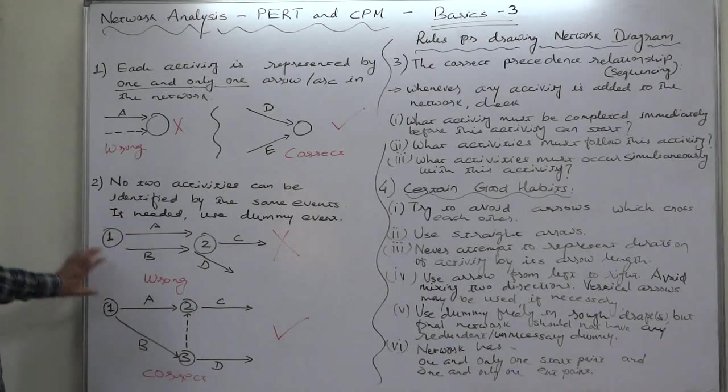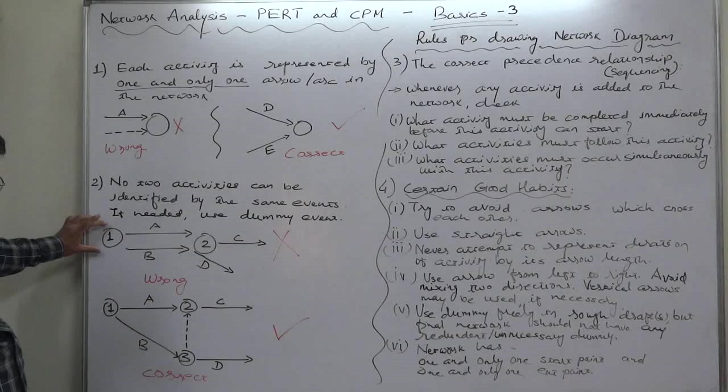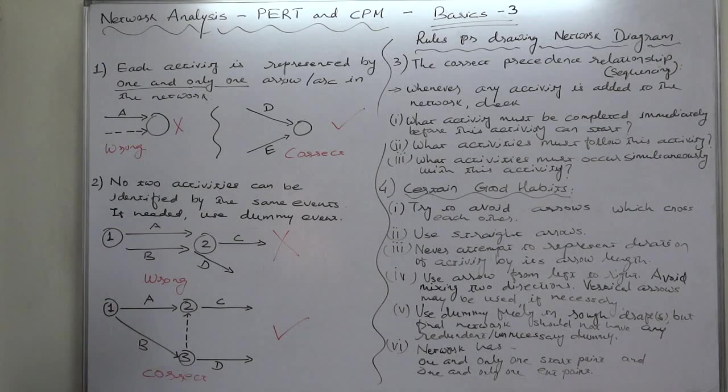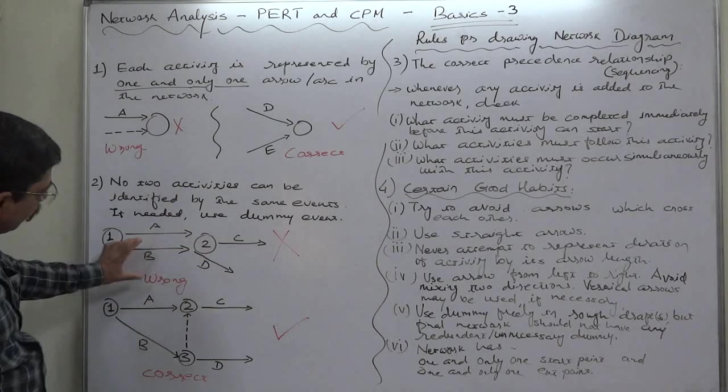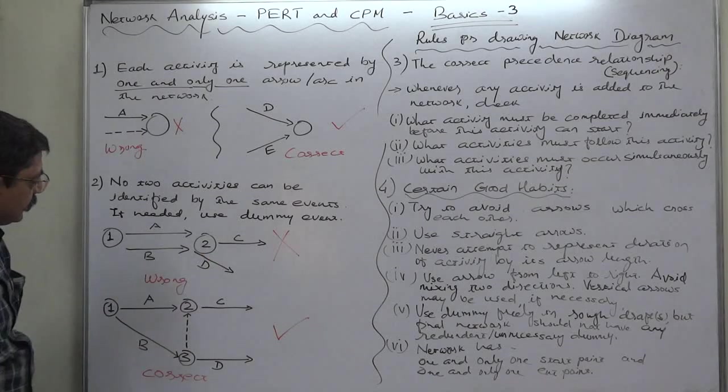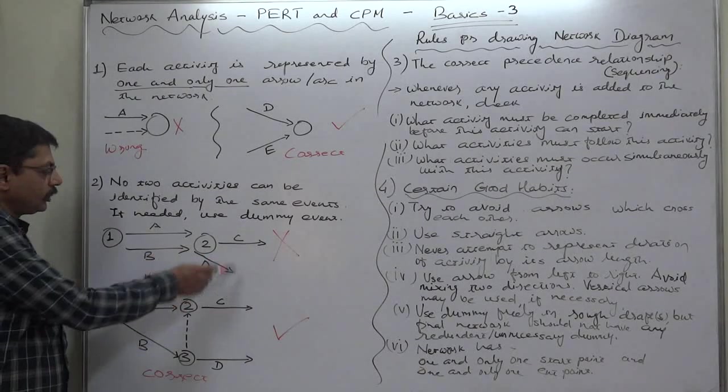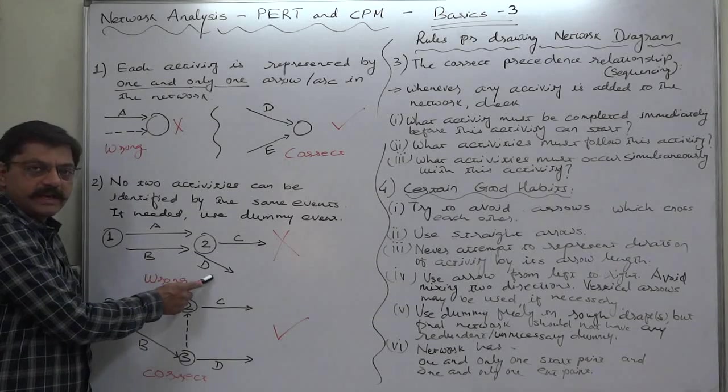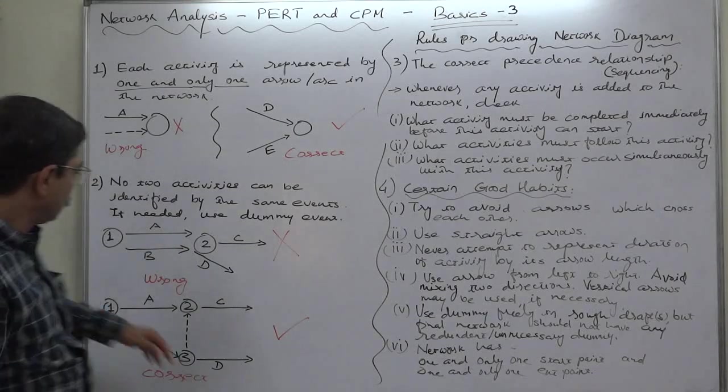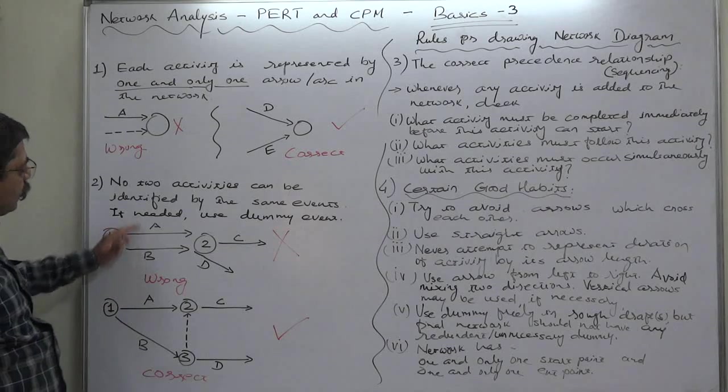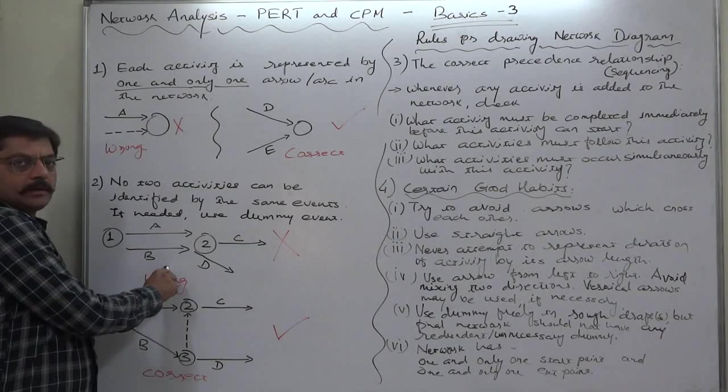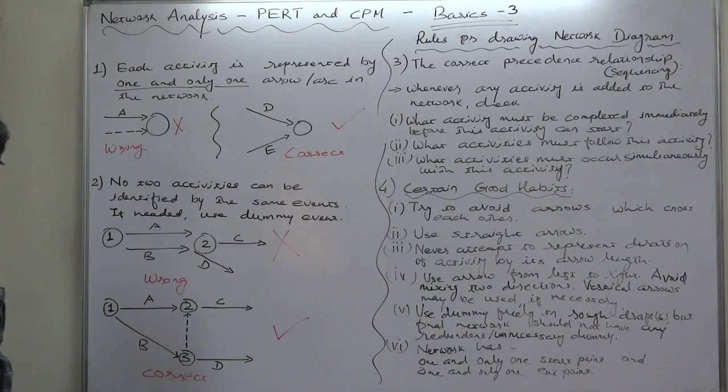See this diagram. Event 1 is the starting point of activities A and B. Event 2 is end point of A and B as well as starting point of C. But someone is trying to show that B is predecessor of D. A and B are common predecessors of C. Now, this is not the proper style of showing all these activities in a network diagram.